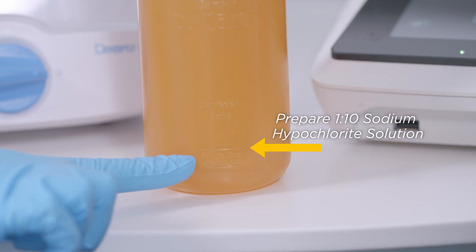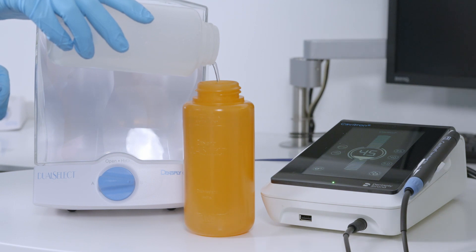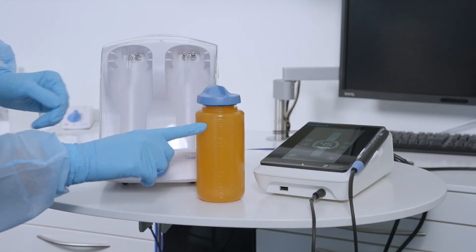Prepare a 1 to 10 sodium hypochlorite solution by adding 5.25% sodium hypochlorite to the designated line on the orange disinfectant bottle. Fill the remainder of the disinfectant bottle with tap water.